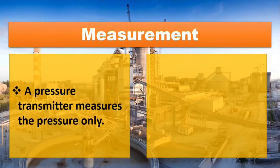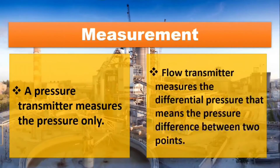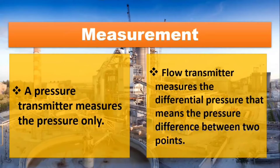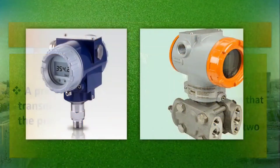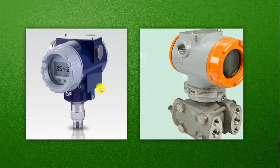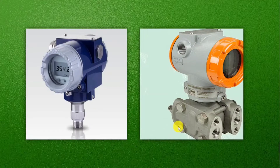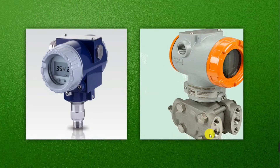Pressure transmitter measures only pressure, whereas flow transmitter measures differential pressure — meaning it measures the pressure difference between two points. In the left image, a pressure transmitter is shown, and in the right image, a flow transmitter is shown. Flow transmitter measures the pressure difference between these two points.